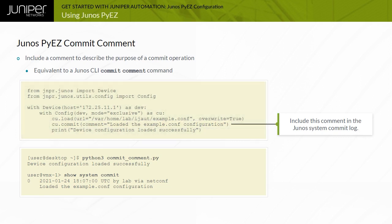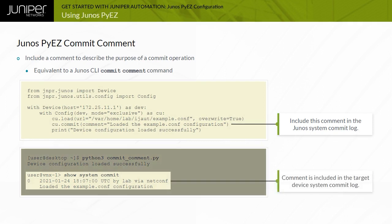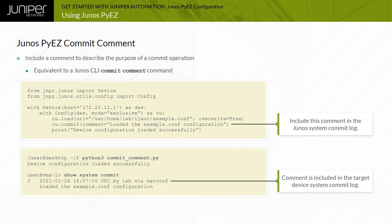The Junos commit log can be viewed using the show system commit Junos CLI operational mode command. This example script uses the commit method comment option to include a comment.